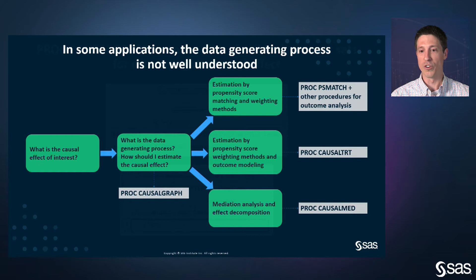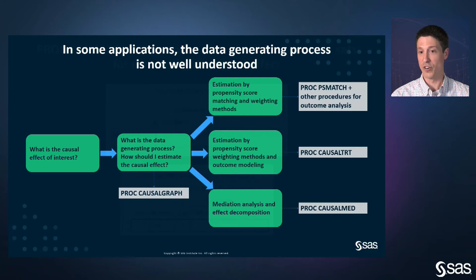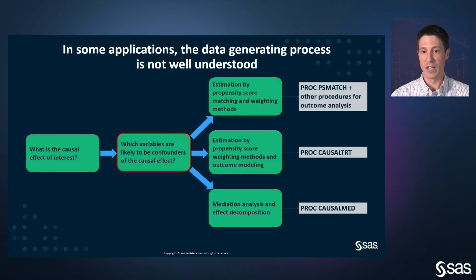Before moving on, I should mention that in many practical situations, the construction of a causal diagram is a daunting or even insurmountable task. Additionally, not all researchers are keen on causal graph analysis. A sufficient alternative assumption is that you can specify all the relevant confounders in the situation under study and make statistical adjustments for these confounders. With such an assumption, you can go straight to effect estimation.